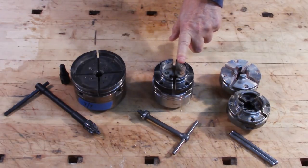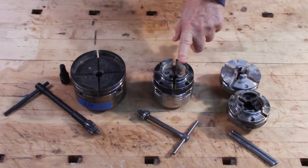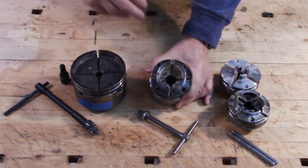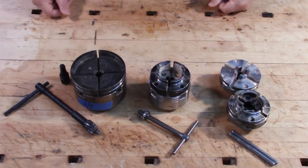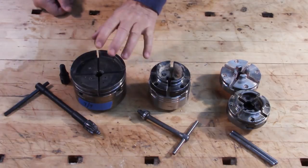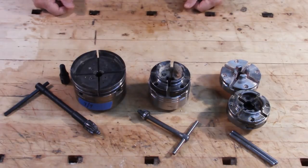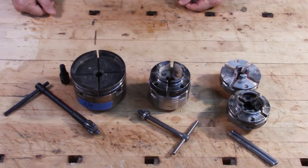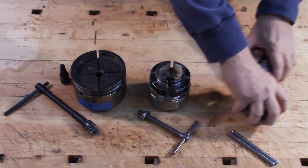This one right here is the Nova G3 chuck, and it's got a set of deep 50mm jaws, which is good for holding longer work. And then this one right here, which I primarily use for turning large bowls, this is a one-way stronghold chuck. So let's take a closer look at these chucks and see what's unique about them.